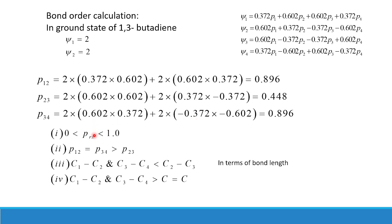In terms of bond length, the terminal bonds C1–C2 and C3–C4 are comparatively shorter than the central bond C2–C3. These bond lengths are also longer than that of a pure olefinic (double) bond, confirming that these bonds are not 100% double bonds but have partial double bond characteristics.